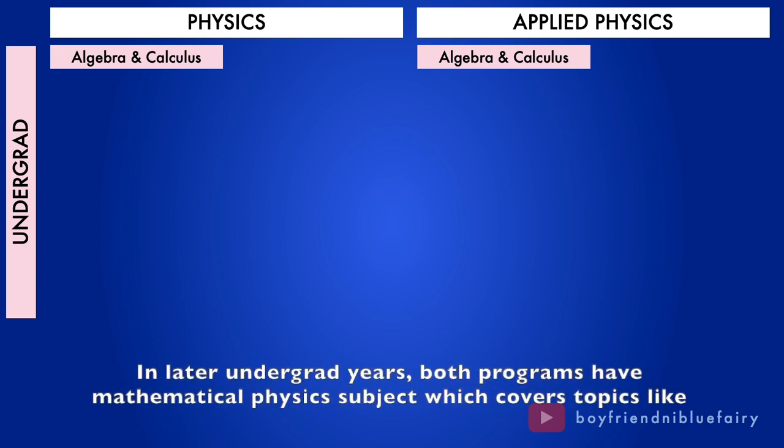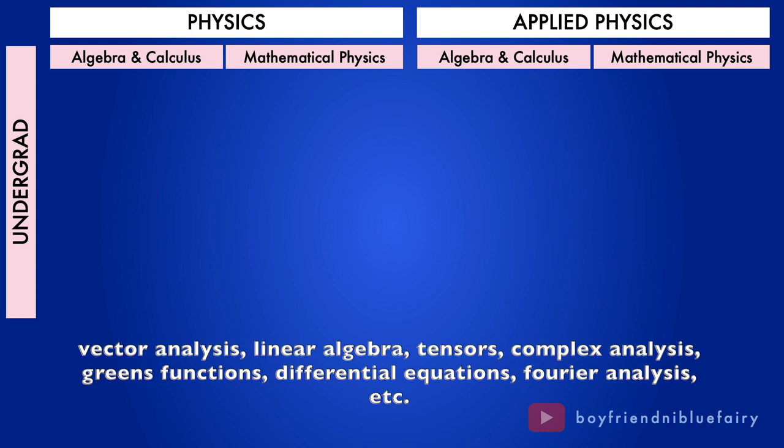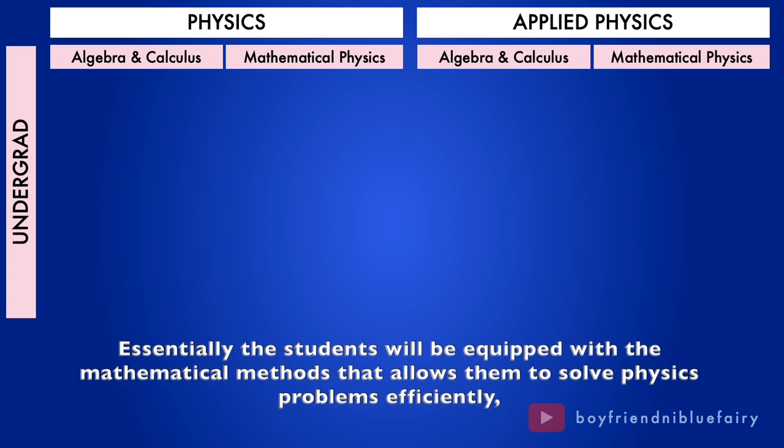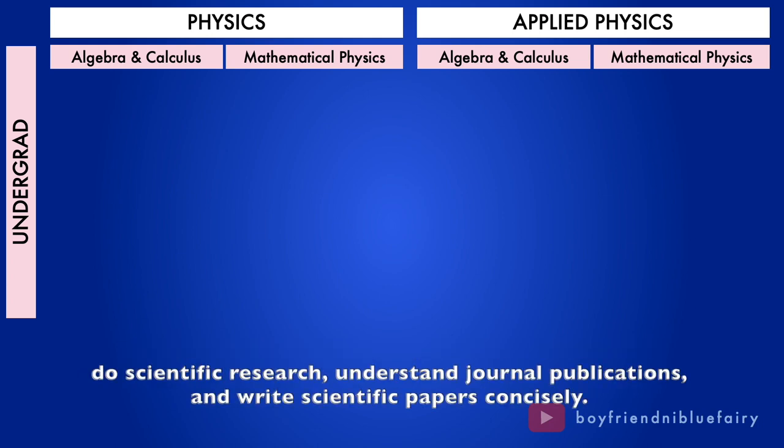In later undergrad years, both programs have mathematical physics subject which covers topics like vector analysis, linear algebra, tensors, complex analysis, greens functions, differential equations, Fourier analysis, etc. Essentially, the students will be equipped with the mathematical methods that allows them to solve physics problems efficiently, do scientific research, understand journal publications, and write scientific papers concisely.